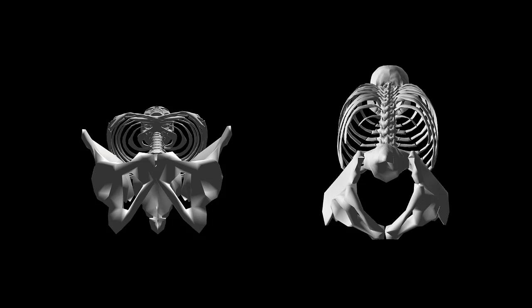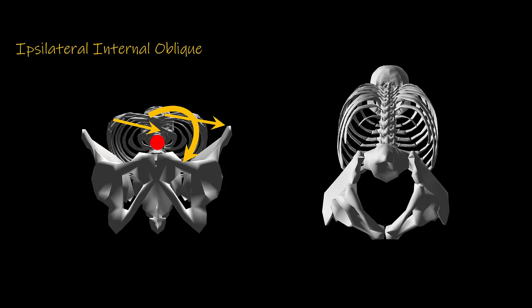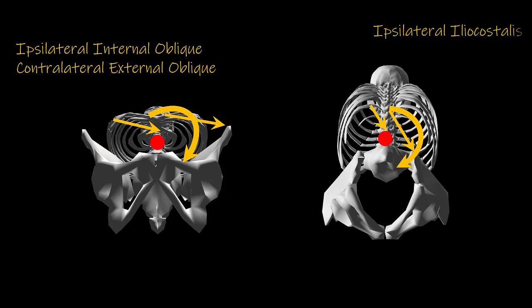Now let's examine the thoracolumbar spine in the transverse plane, which occurs about an axis that again goes through the vertebral bodies. Anteriorly, a muscle on the right side or a muscle on the left side can both rotate the thoracolumbar spine to the left. This would include the ipsilateral internal oblique and the contralateral external oblique. Posteriorly, an MTC on the left side and an MTC on the right side can both produce a torque that causes rotation to the left — this would include the ipsilateral iliocostalis and the contralateral multifidus.